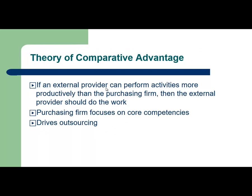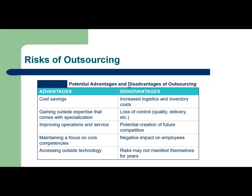It is a theory that if an external provider can perform activities more productively than the purchasing firm, then the external provider should do the work and the purchasing firm focuses on core competencies. The main risk of outsourcing is losing control on quality, delivery, and performance. If outsourcing exceeds more than 50% of activities, then the company is creating a potential for future competition.